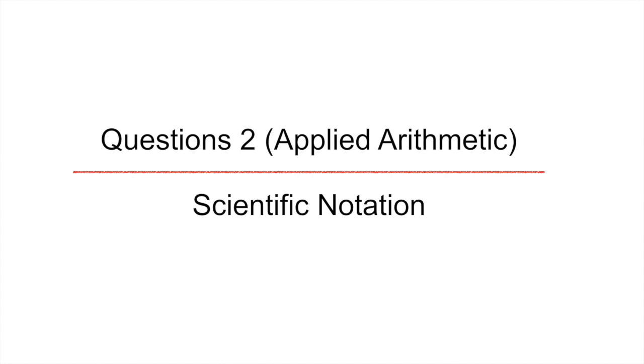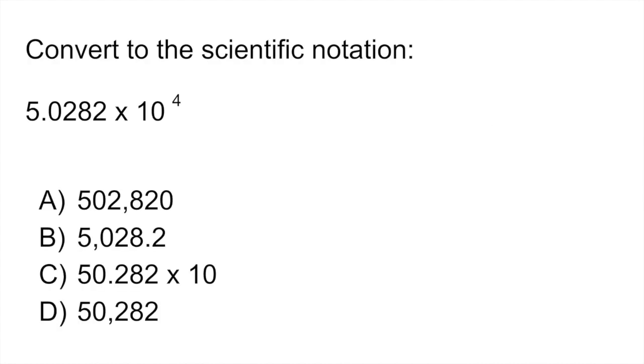Question two is from the applied arithmetic section, and here we're looking at scientific notation. So sometimes they ask you to convert a number to scientific notation, or the other way around. In this case, they give you 5.0282 times 10 to the fourth power.